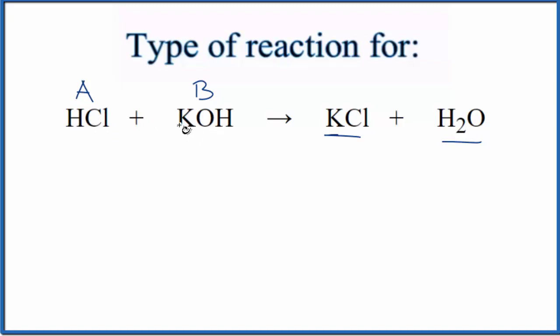For KOH, we have a metal plus this OH. This is the hydroxide group. So when you see that OH and it's bonded to a metal, you're thinking it's going to be a base.